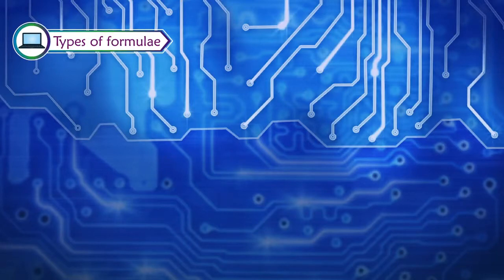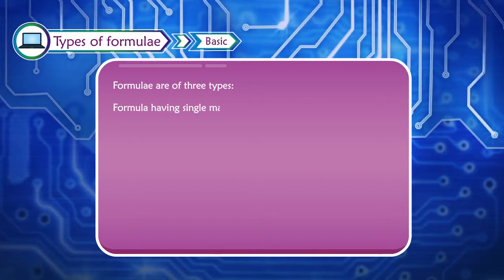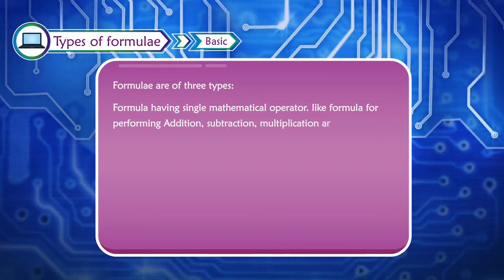Types of formulae. Formulae are of three types. Basic formula having single mathematical operator, like formula for performing addition, subtraction, multiplication and division. Example: equals B1 plus B2.